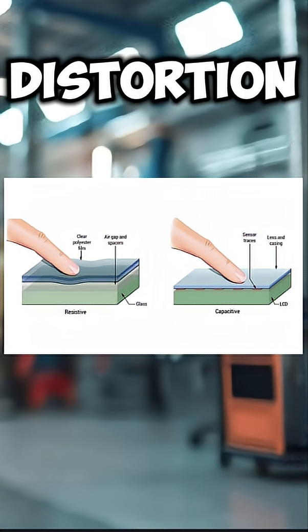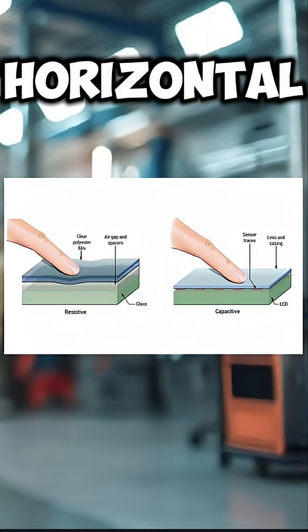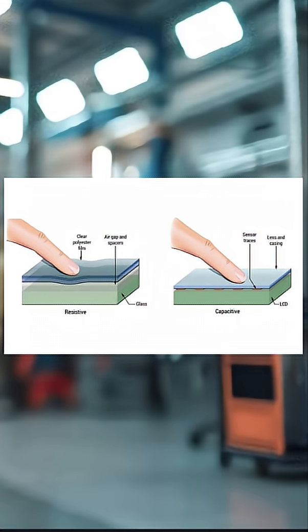That small distortion in the electric field tells the system exactly where you touched by measuring which horizontal and vertical lines were affected. Boom. Instant X and Y coordinates.